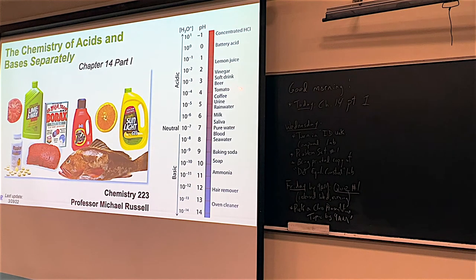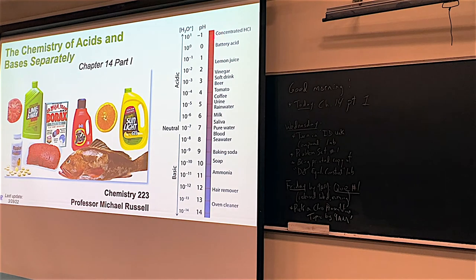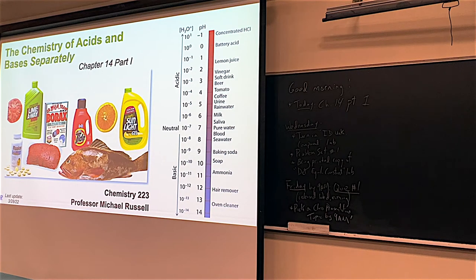Instead of saying our tomato has some random molarity, you can say the pH is 3.7. pHs less than seven are the acidic pHs, and pHs greater than seven are basic. On the right-hand side here, you can see some common things around you — coffee, urine, beer, soft drinks, lemon juice, battery acid. Things like seawater are actually a little bit basic. Soaps are definitely a little bit basic. Ammonia, used as a cleaner, is basic, and oven cleaner is extremely basic. We'll see how this applies to our day-to-day world.